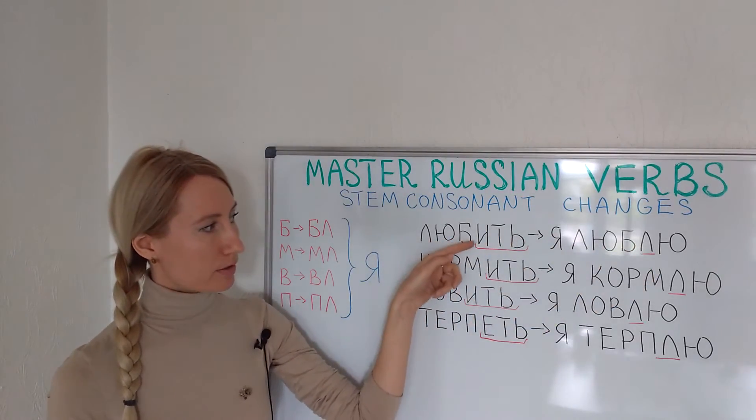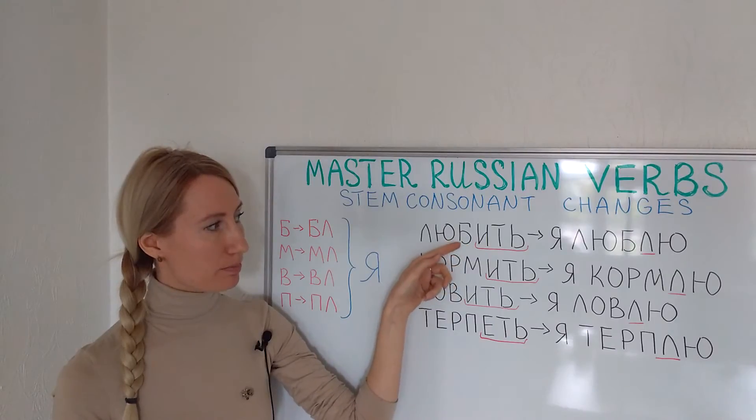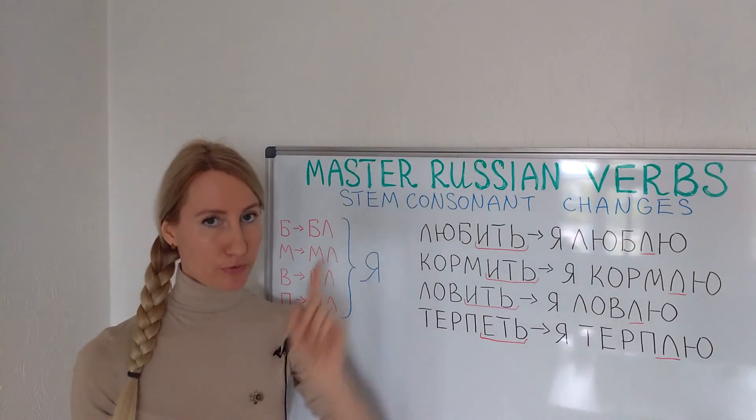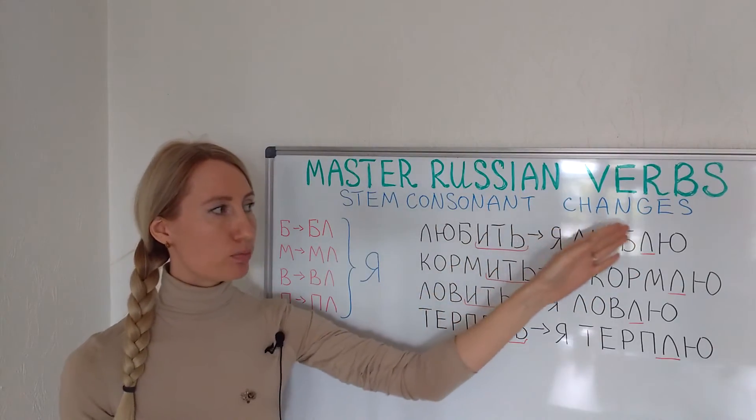Любить, to love. The stem ending is Б, that's why we have this letter appearing for first person: я люблю. But all the others will remain as they are.